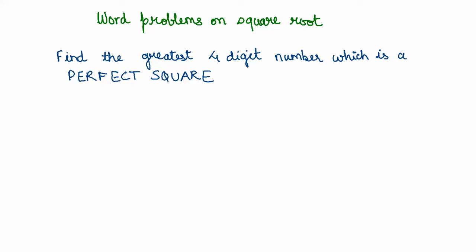We need to find the greatest four-digit perfect square number. But before we find the square number, what is the biggest four-digit number that we know of? The greatest four-digit number is 9999—all four nines.